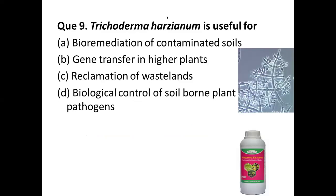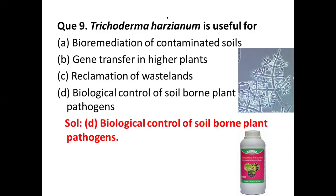Question number nine: Trichoderma harzianum is useful for — options are: (a) bioremediation of contaminated soils, (b) gene transfer in higher plants, (c) reclamation of wastelands, (d) biological control of soil-borne plant pathogens. The correct answer is option (d) biological control of soil-borne plant pathogens. Trichoderma harzianum is a fungus used as a fungicide; commercially available products include Tri-Tack, useful in treating Botrytis, Fusarium, and Penicillium species. It is also used in enzyme manufacture, though it can be a source of contamination for mushroom farmers.